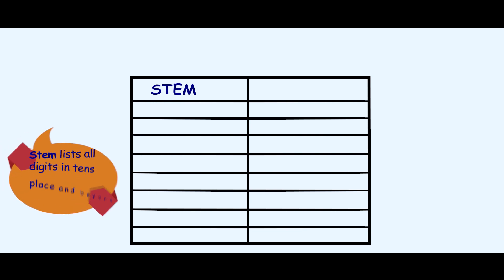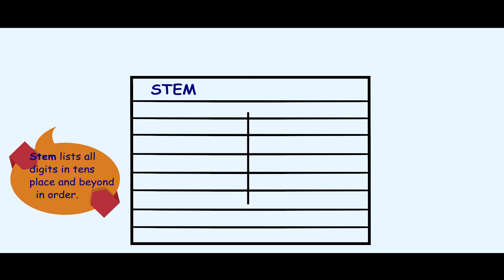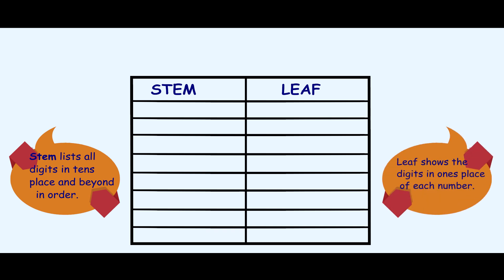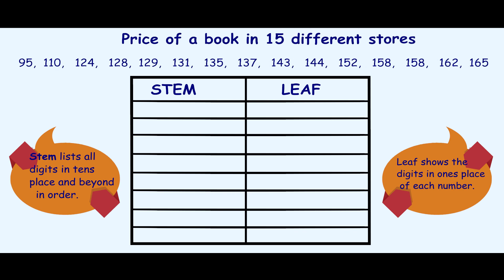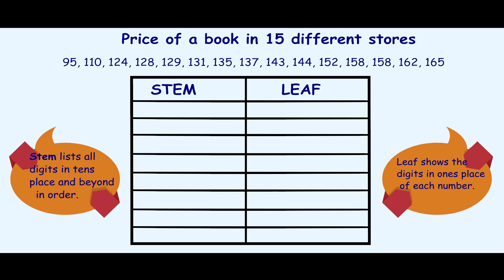The plot has two columns. The first column is called the stem, and this will list all the digits in the tens place in order. A vertical line divides the stem from the leaf. The second column is called the leaves, which shows the ones place of each number in the data set, also in order. Whichever method we use, the first thing we need to do is always arrange the data in ascending order, that is, from the least to the greatest.